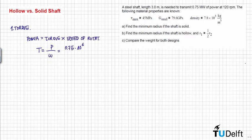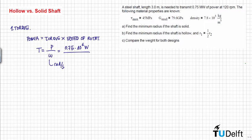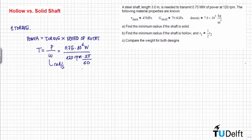The power that we need to transmit is equal to 0.75 megawatts, so 0.75 × 10⁶ watts, divided by the speed of rotation. In order to be consistent with the units, this must be given in radians per second. So we have 120 revolutions per minute, multiplied by 2π to get radians and divided by 60 to get seconds. From here, we have that the total torque is equal to 59.7 kNm.